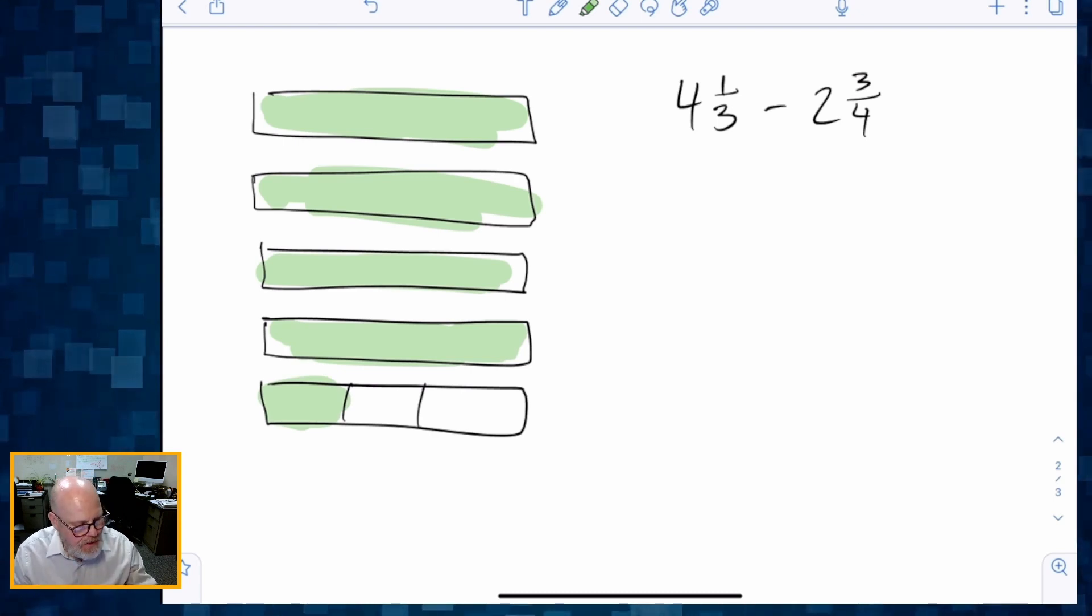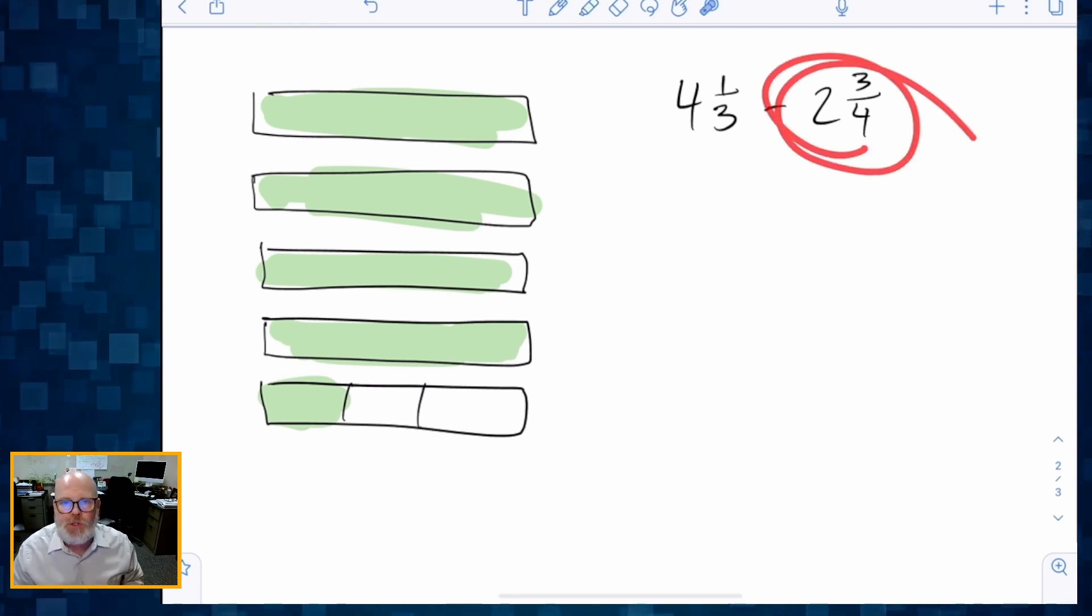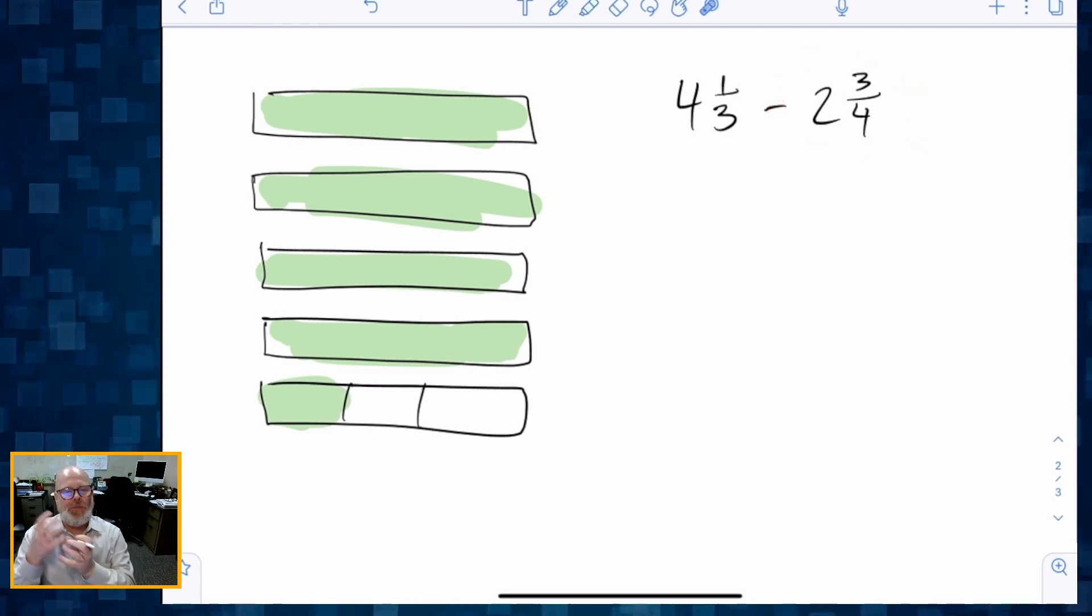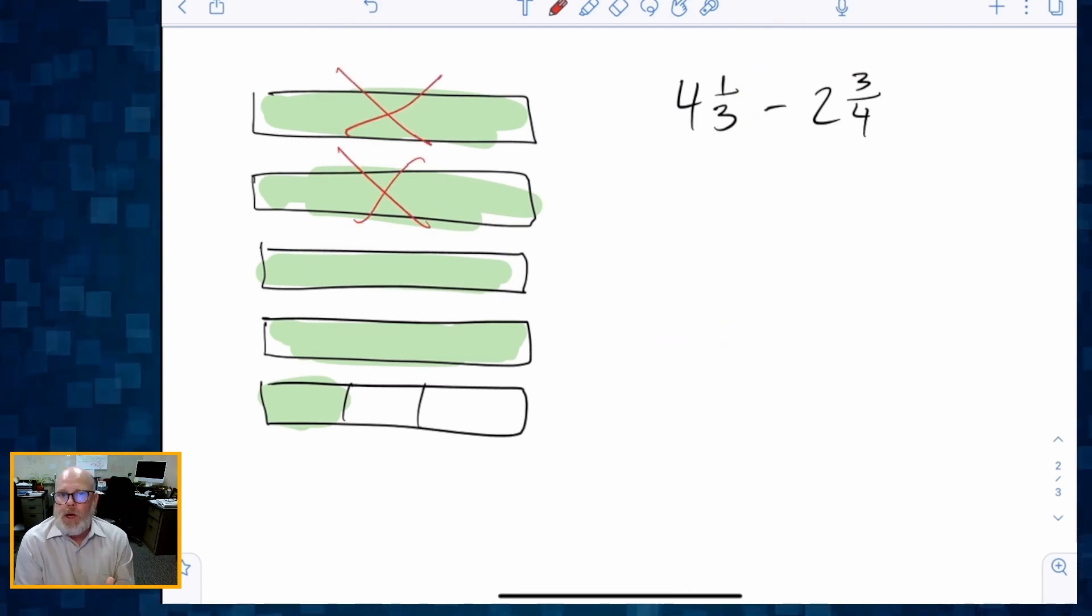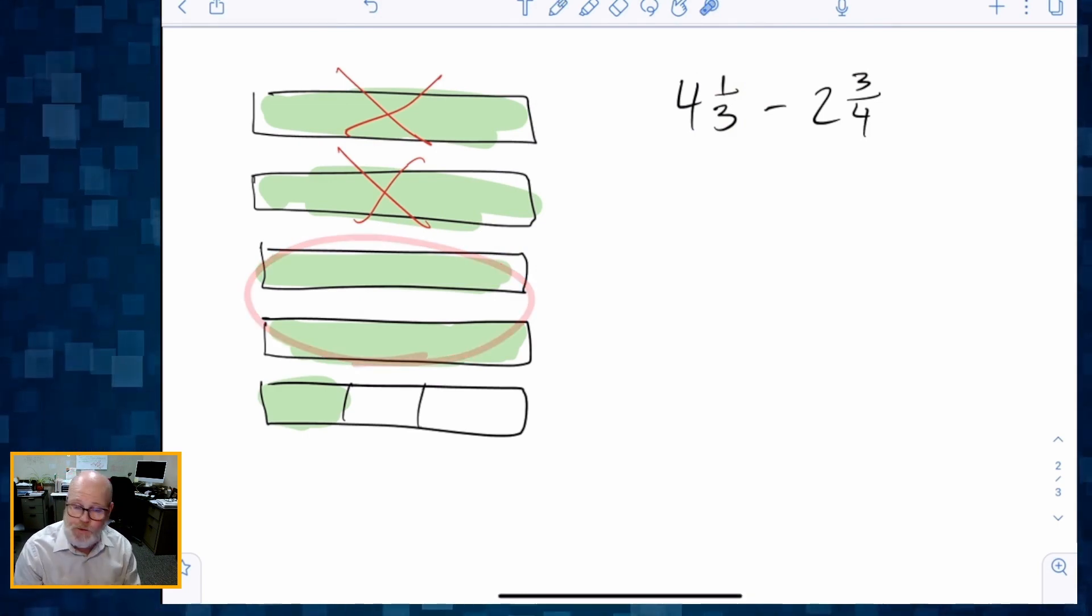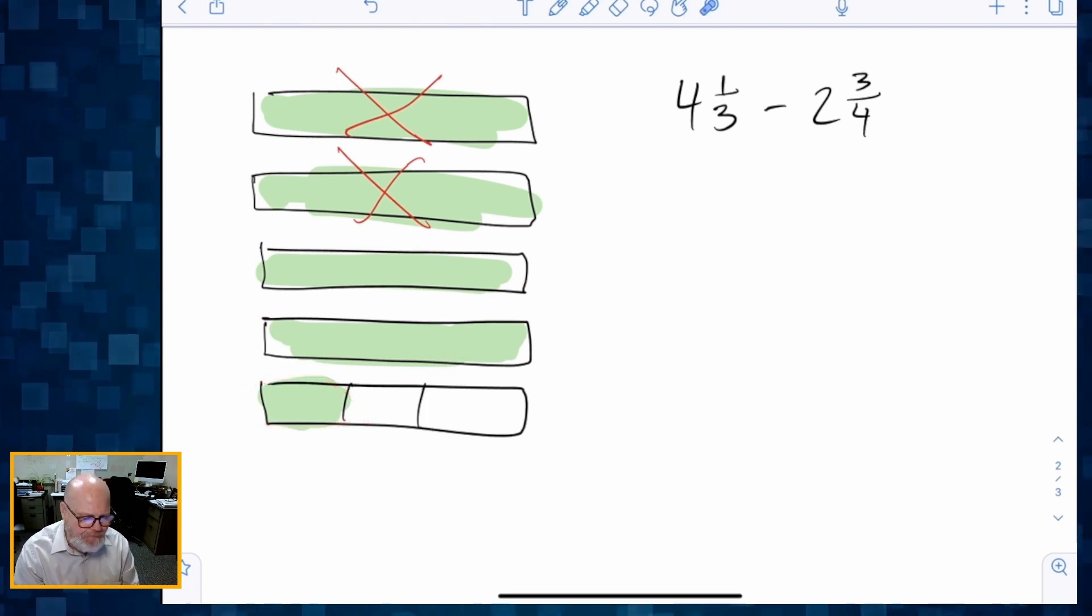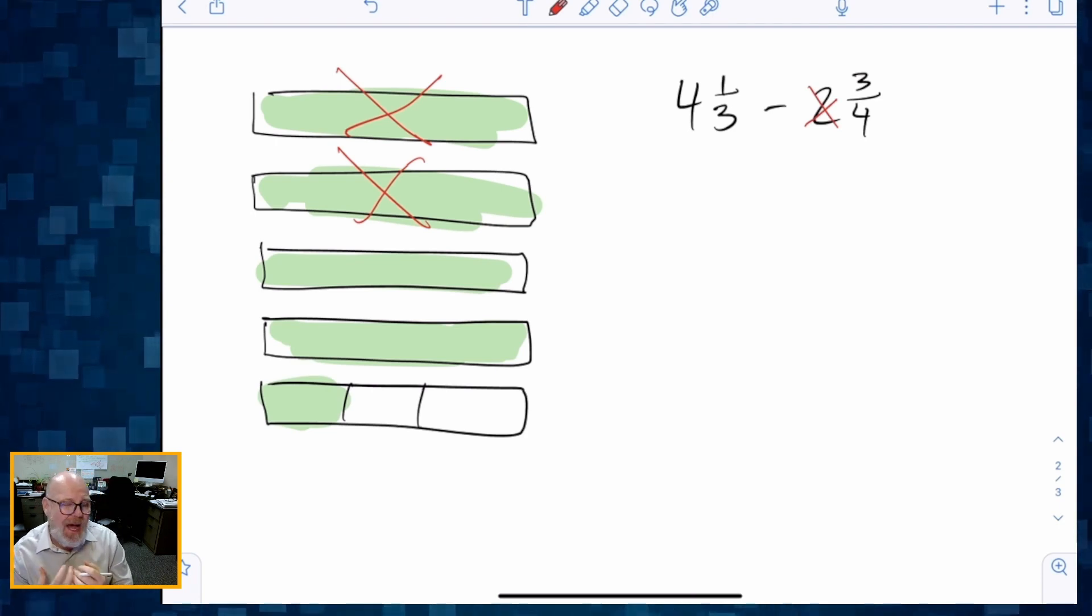And now what we want to do is we want to represent subtracting 2¾. All right, well, subtracting two is super duper easy. All we have to do is cross off one hole and two holes. And there we go. We're done. We've subtracted two holes. And so right now we have two holes left over plus a third. But now, I might as well kind of cross this off and say, hey, all right, we've subtracted the two. But now we have to subtract that three fourths.